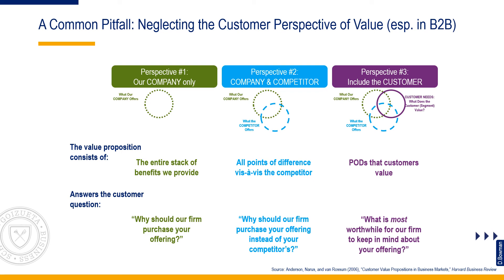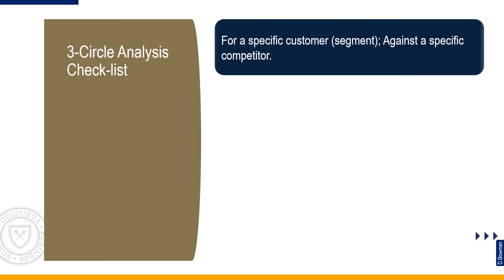An all-too-common pitfall when developing a value proposition is to be strictly internally focused, as Anderson and his co-authors observed back in the mid-2000s. They highlighted three perspectives firms take. Number one (shown in green) is the easiest path, almost always compiled by sitting at your desk: firms define their value proposition as the entire stack of benefits they provide without any consideration of customer needs or competitor offerings. Number two (shown in blue) defines the value proposition as all points of difference vis-à-vis the competition — wherever we are different adds value — but this too is largely compiled from one's office desk. Number three (shown in purple) requires getting out of the office to talk with customers, identifying the points of difference vis-à-vis competitors that are actually valued by customers — what resonates with customers.